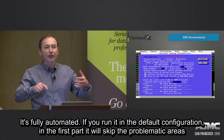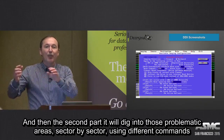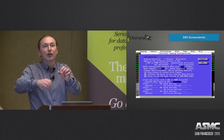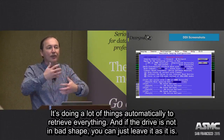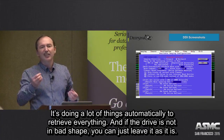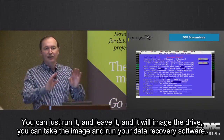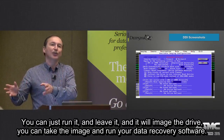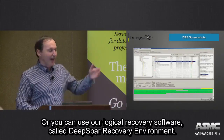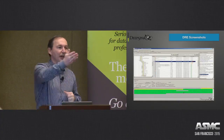When you run it with default configuration, it will do a first pass keeping track of all problematic areas, then a second pass digging into those problematic areas sector by sector using different commands. It does lots of things automatically to retrieve everything. When the drive is not in bad shape, you can just leave it running and it will image the entire drive — then you can take that image and run any data recovery software, or use our logical recovery software called DeepSpar Recovery Environment.